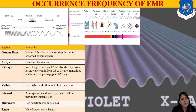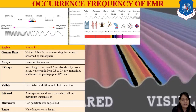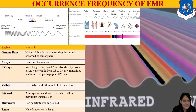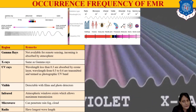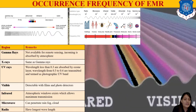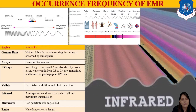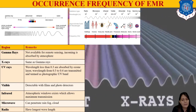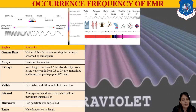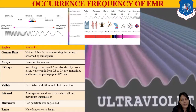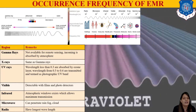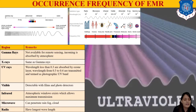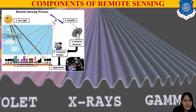UV is not much used in remote sensing. Visible range is used in almost all sensors — detectable with films and photo detectors. Infrared has atmospheric windows, which we will see in detail. Microwave can penetrate fog, cloud, and rain. Radio waves have the longest wavelengths and are not much in use. We mainly work in the visible, near infrared, and microwave ranges.